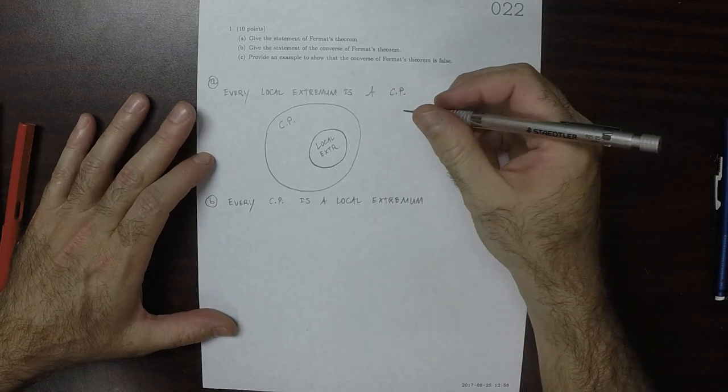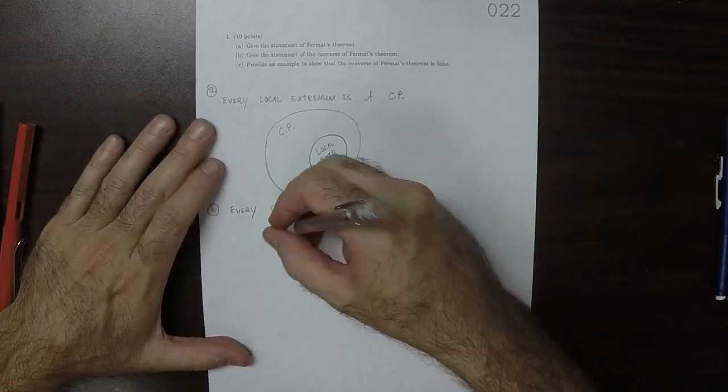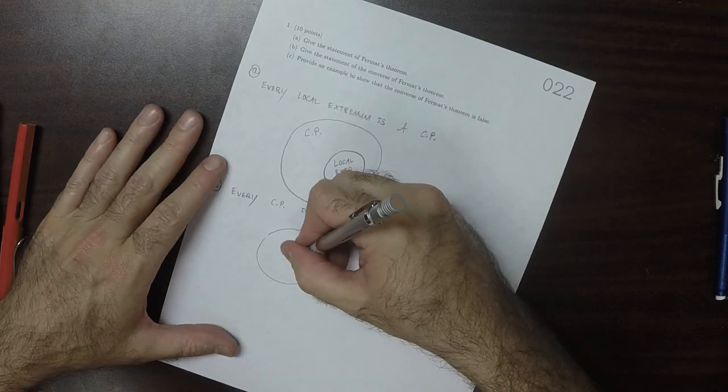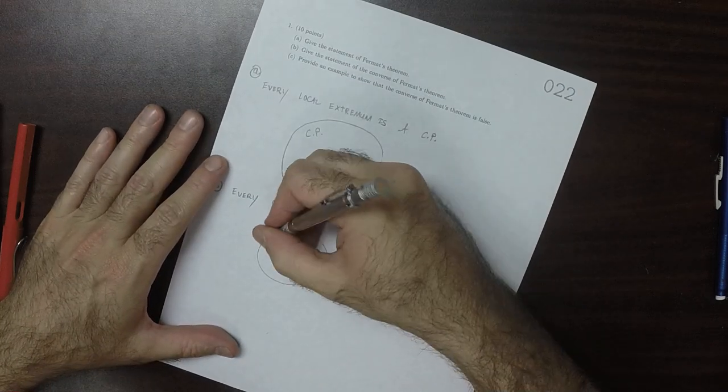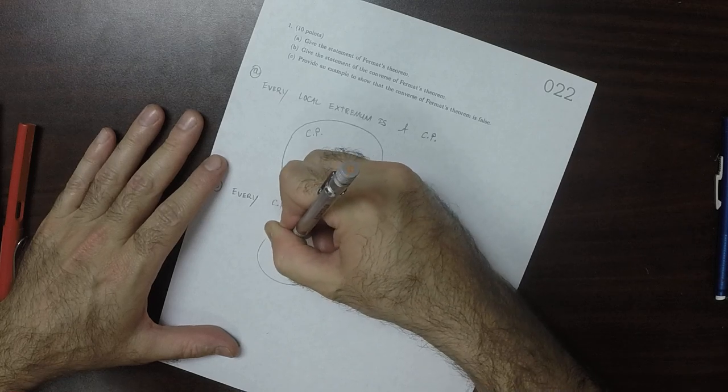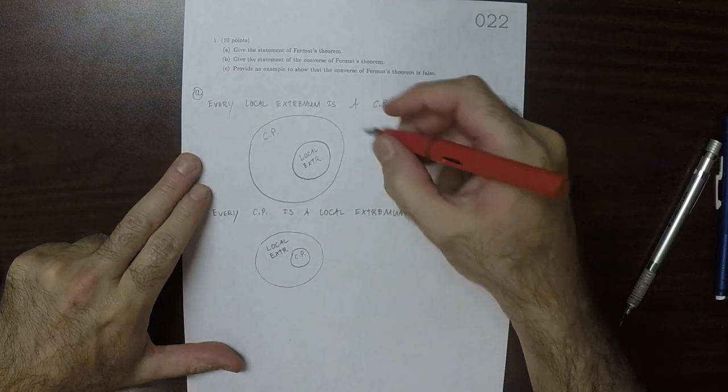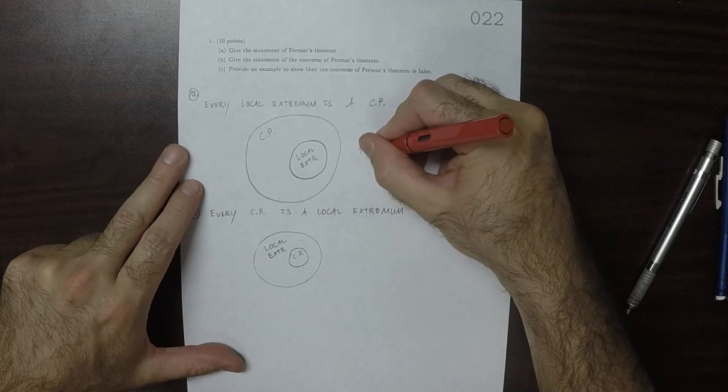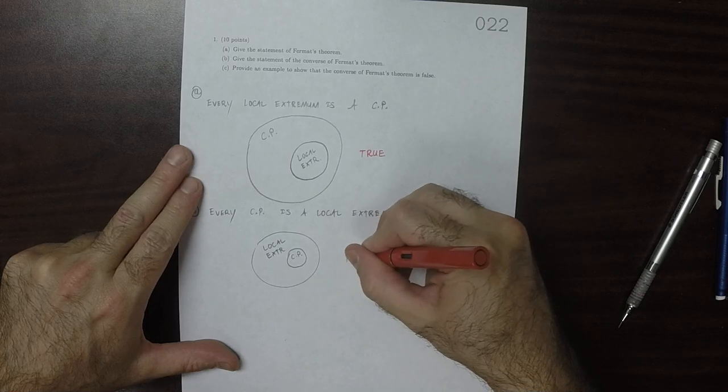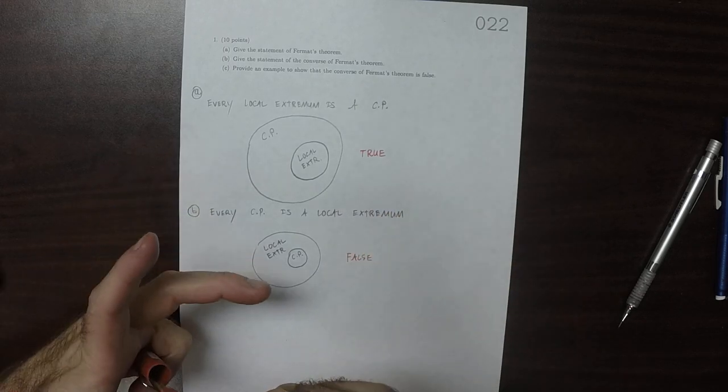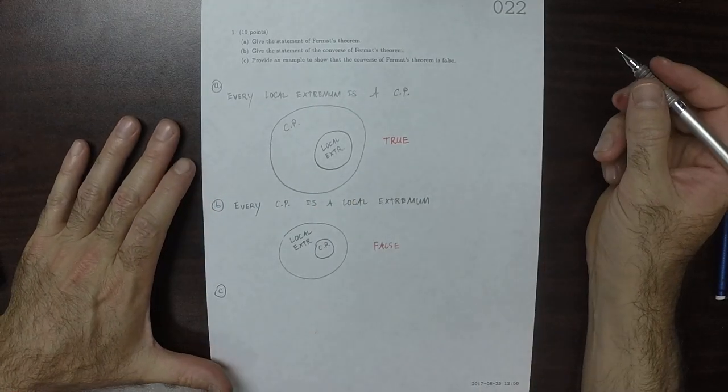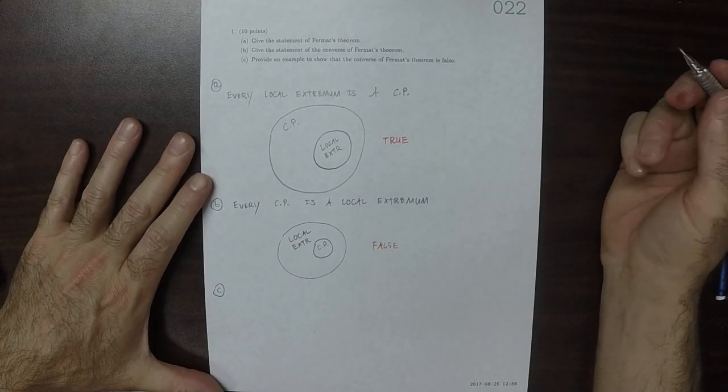So the converse is making the claim that this is true. Okay, so Fermat's theorem, this is true. The converse of Fermat's theorem is false. And Part C is asking you to give an example of why the converse is false.